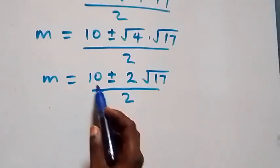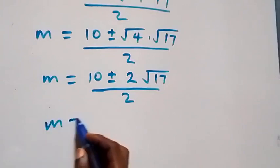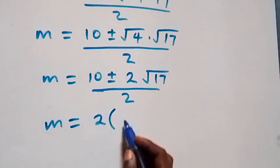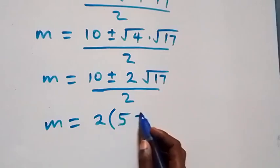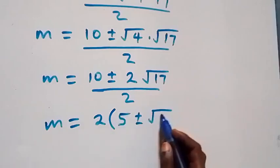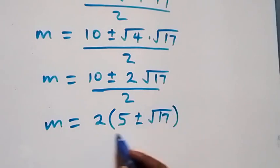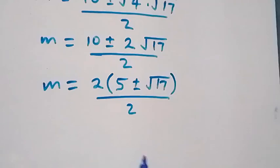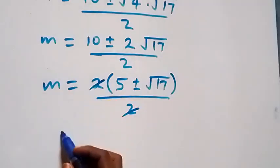We have 2 as a common factor, so m equals to 2 into bracket 5 plus or minus root 17, all over 2. The 2s cancel each other.